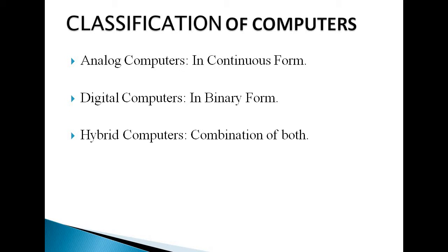The second type is the digital computer. Digital computer means binary form — data is in the form of 0 or 1 — which is useful to evaluate arithmetic expressions and for manipulating data such as preparing a bill or digital letters. It operates on data including magnitudes, symbols, and letters.